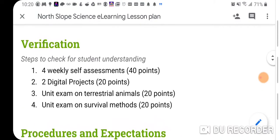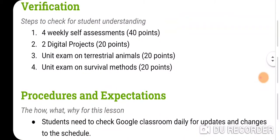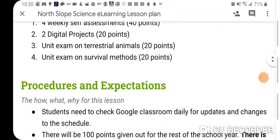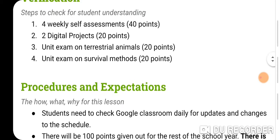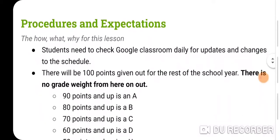The points you'll be getting are as follows: four weekly self-assessments, each worth 10 points, totaling 40 points. You'll get two digital projects worth 20 points total, that's 10 points each. You'll have a unit exam on the terrestrial animals — 20 questions, 20 points — and a unit exam on survival methods, again 20 questions, 20 points.